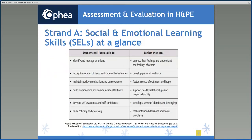Let's take a closer look at Strand A, Social Emotional Learning Skills at a Glance, which can be found on page 292 of the appendix. The strand helps students develop SEL skills to foster overall health and wellbeing, positive mental health, and the ability to learn, build resilience, and thrive. Learning related to the expectations in this strand occurs in the context of learning related to the other three strands — active living, movement competence, and healthy living — and should be assessed and evaluated within these contexts. In other words, these skills must be explicitly taught and evaluated in the context of learning in all strands of the curriculum.